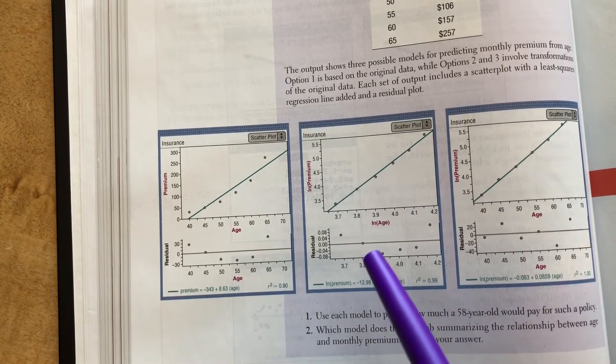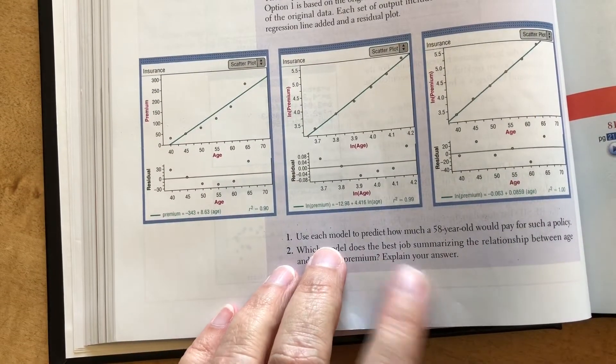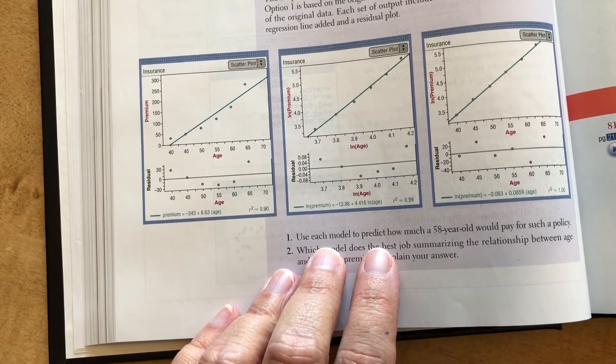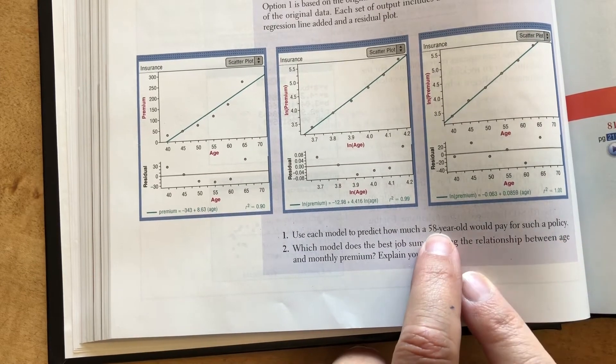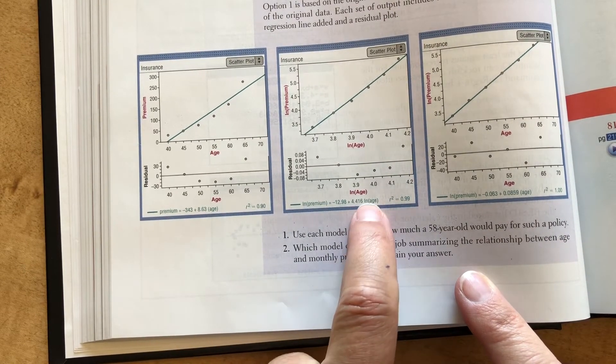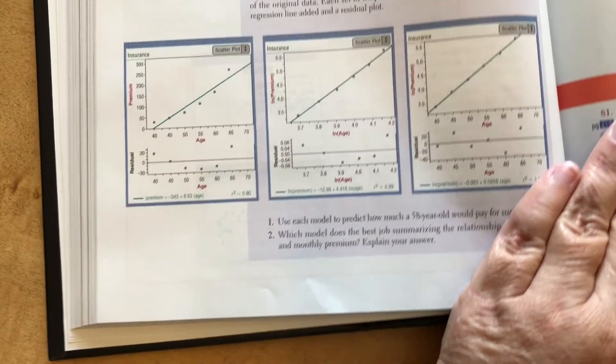Each set of output includes a scatter plot, least squared regression line, and a residual. All right, we've already talked about those. Let's use each model to predict how much a 58-year-old would pay for such a policy. So I know I have to take 58 and plug it in for the age in all of these equations.